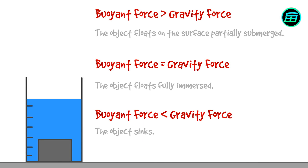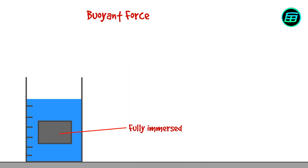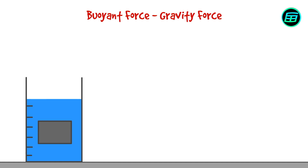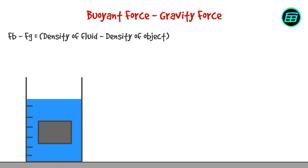If we look at the difference — buoyant force minus gravity force — we can form the equation: buoyant force minus gravity force equals (density of fluid minus density of object) times gravitational acceleration times the volume of the object.